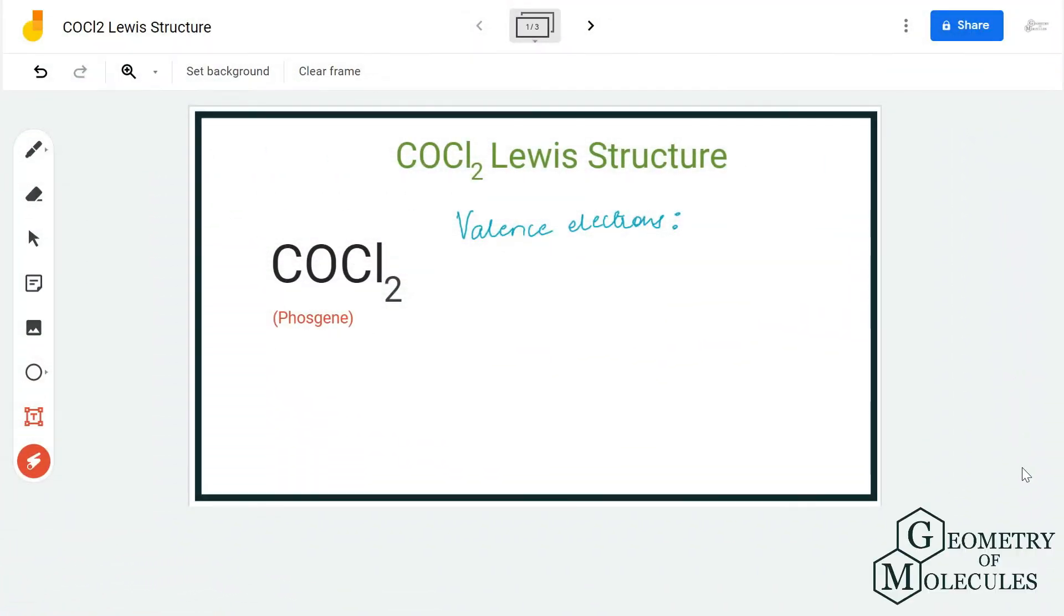Hi guys, welcome back to our channel. In today's video, we are going to look at the Lewis structure for COCl2. To determine its Lewis structure, we are first going to look at the total number of valence electrons.